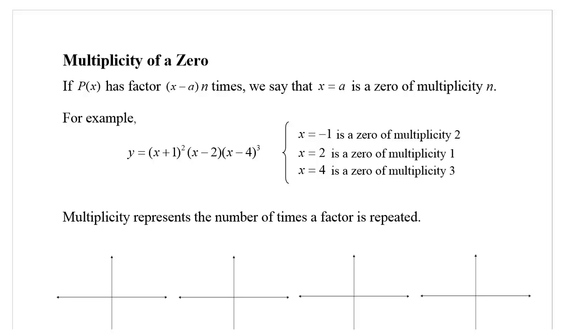This is the second part of 3.4. Sometimes when we have a polynomial in factored form, it might have the same factor more than one time. We call that multiplicity of a zero. If the polynomial P(x) has a factor (x-a) n times, we say that x equals a is a zero of multiplicity n.